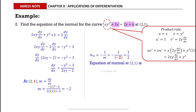Then we can find the gradient of normal using the formula. Now solve for the equation of normal by substituting all the values into the formula and simplifying. You can also leave your answer in this form.